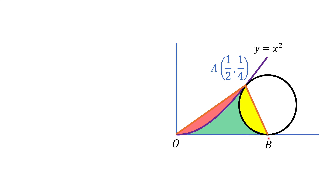So first of all, let's find the area of triangle OAB. The area of triangle OAB is one-half times height times base. The height is the vertical distance from point A to the horizontal axis, which corresponds to the vertical coordinate of point A. The base is the segment OB, which we don't know yet — that's what we want to find.